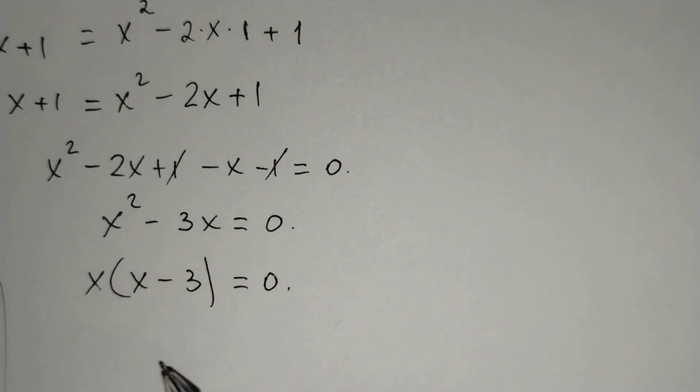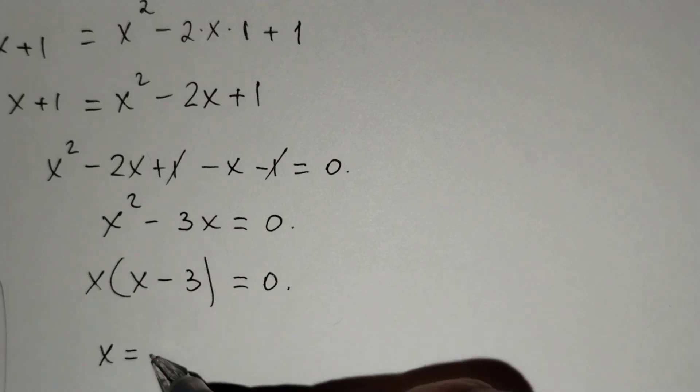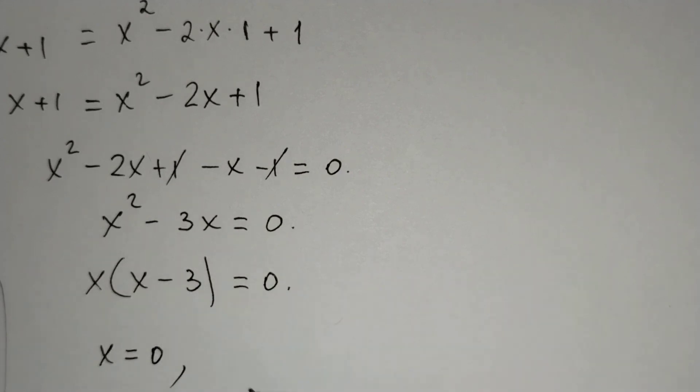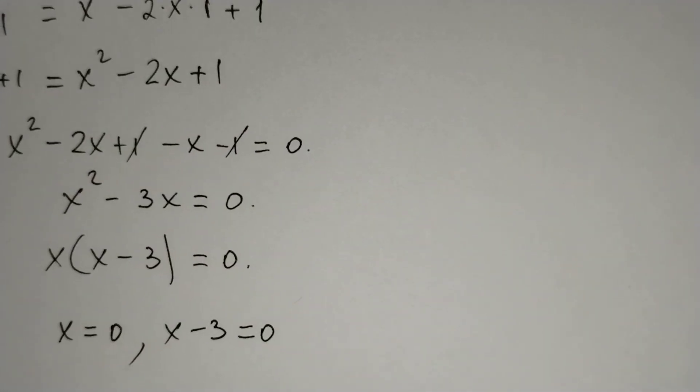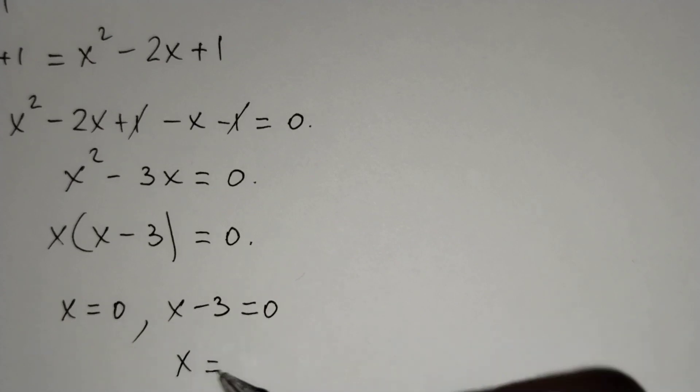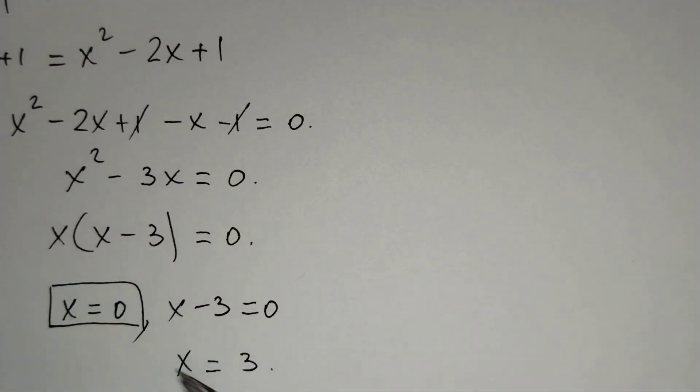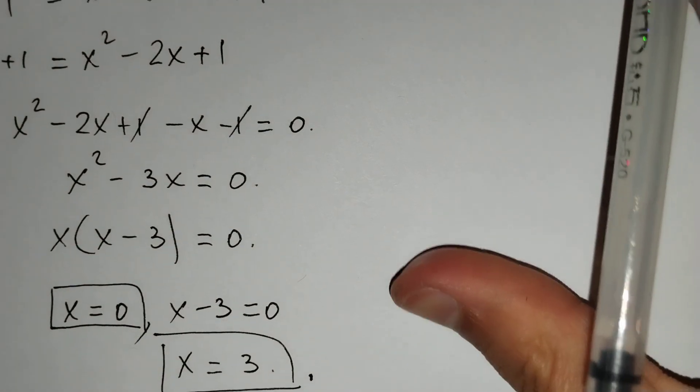And x equals 0. And x minus 3 equals 0. And from this equation, x equals 3. They are our solutions. And let's check it, 0 and 3.